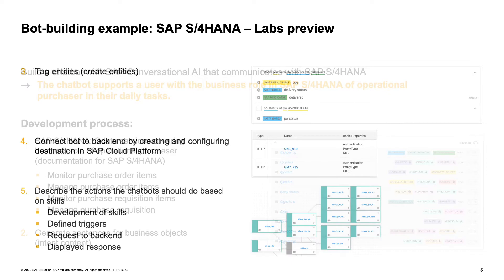As the next step, we tag these entities and create entities. In this specific example, as you can see on the right-hand picture, we have basically three entities which we tag directly in the specific sentences — in these specific utterances. We then create entities such as attributes and also the specific values of these attributes.